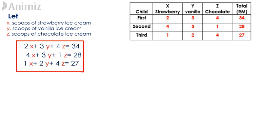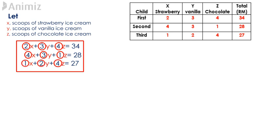With that, we have our three linear equations derived from the information given in the question. We proceed to converting these three linear equations into a matrix equation of the form AX equals B. The elements for the first row of matrix A are the coefficients of X, Y and Z from the first linear equation, and the elements for the second row are the coefficients from the second linear equation. Therefore, A is the matrix containing the elements 2, 3, 4 in the first row; 4, 3, 1 in the second row; and 1, 2, 4 in the third row.